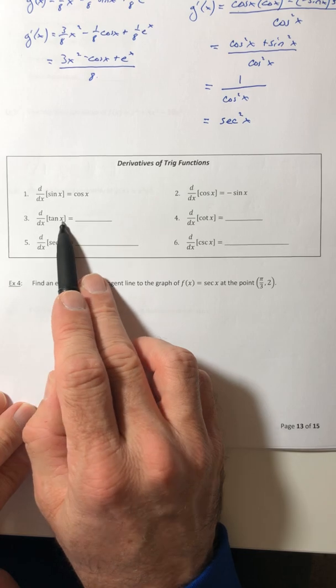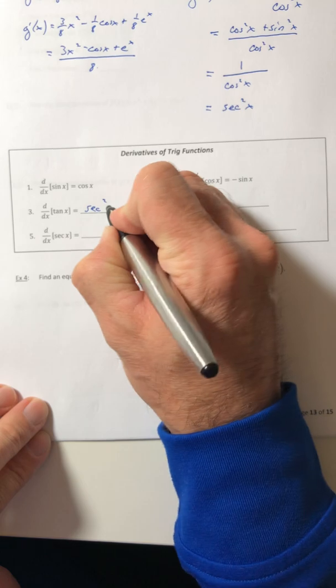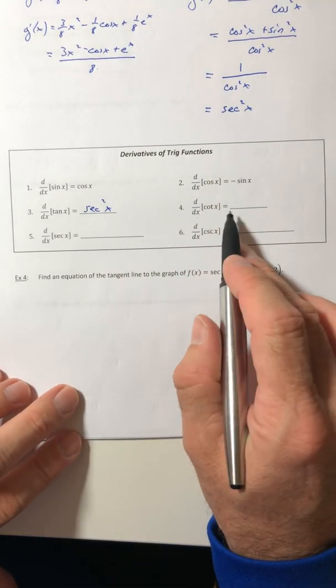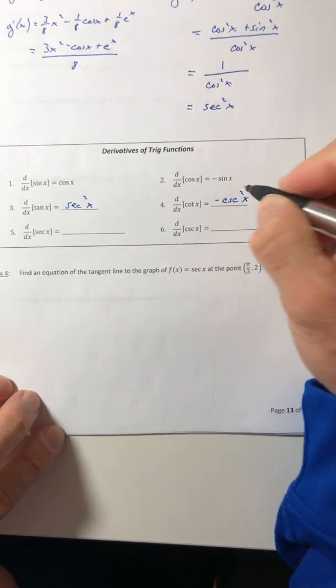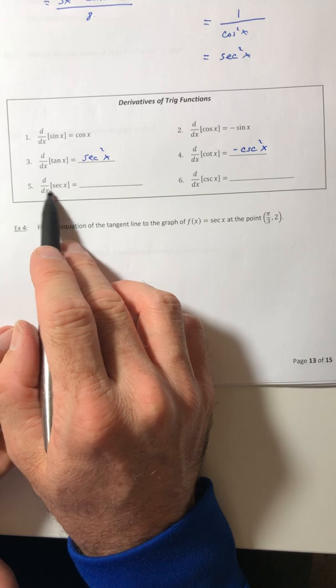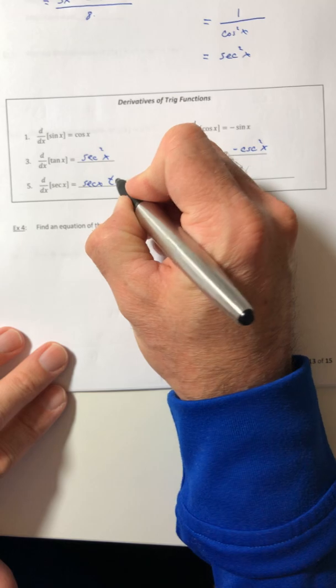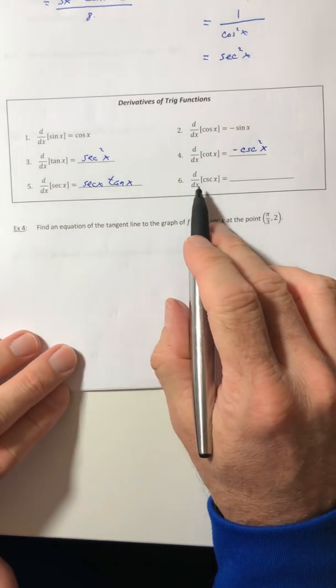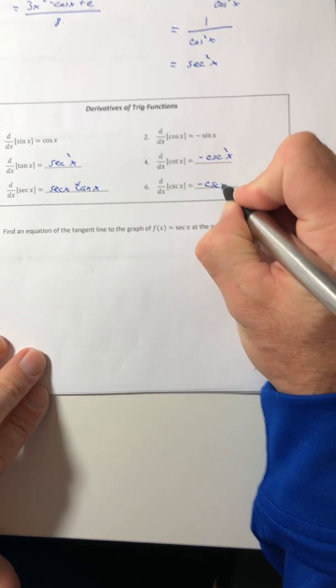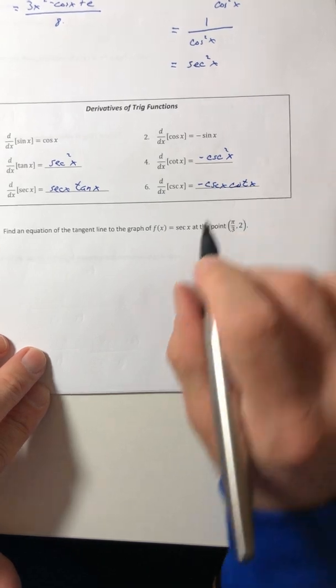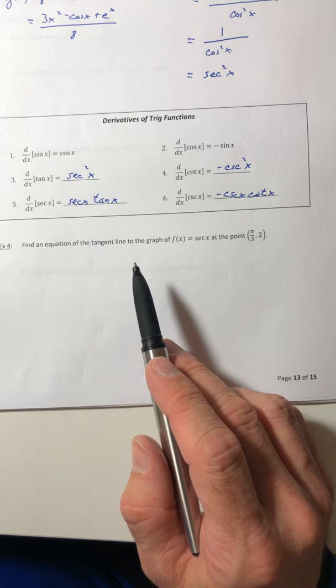The derivative of tangent we just proved is secant squared. The derivative of cotangent is negative cosecant squared. The derivative of secant is secant tangent and the derivative of cosecant negative cosecant cotangent. So here are the derivatives of your six trig functions.